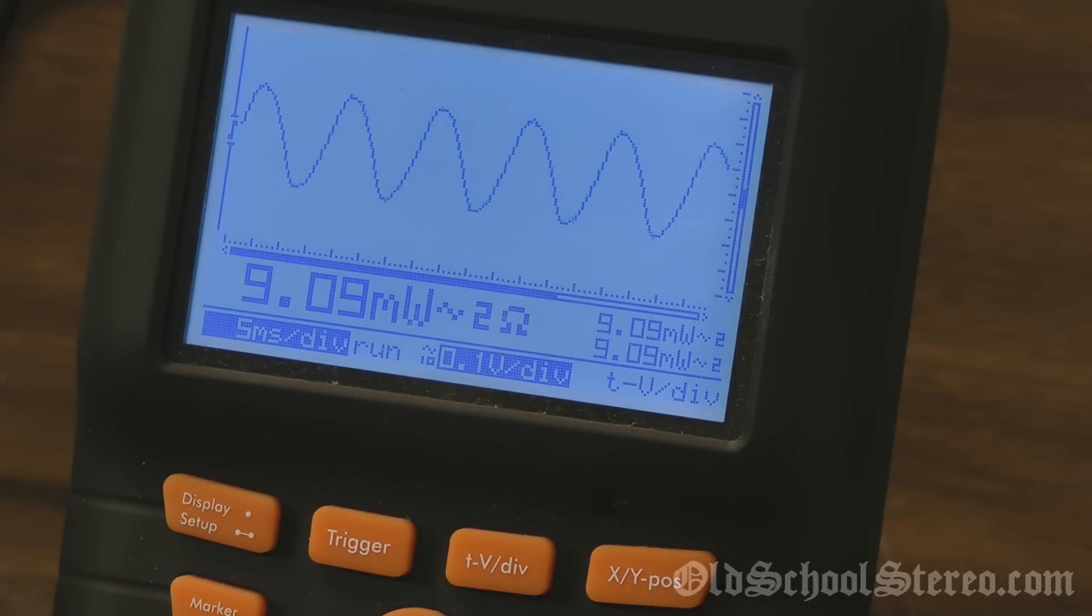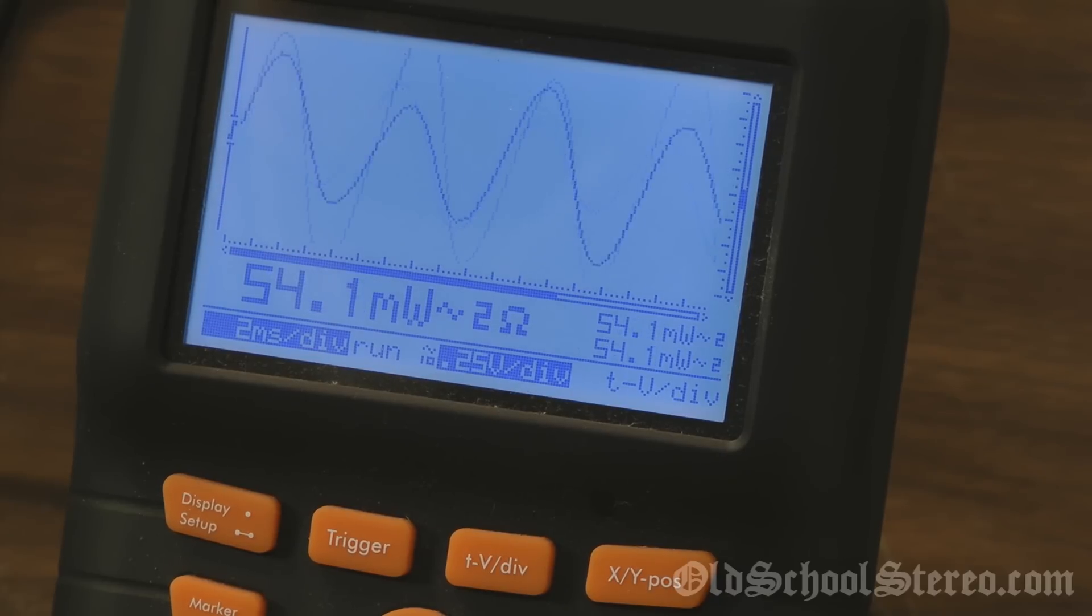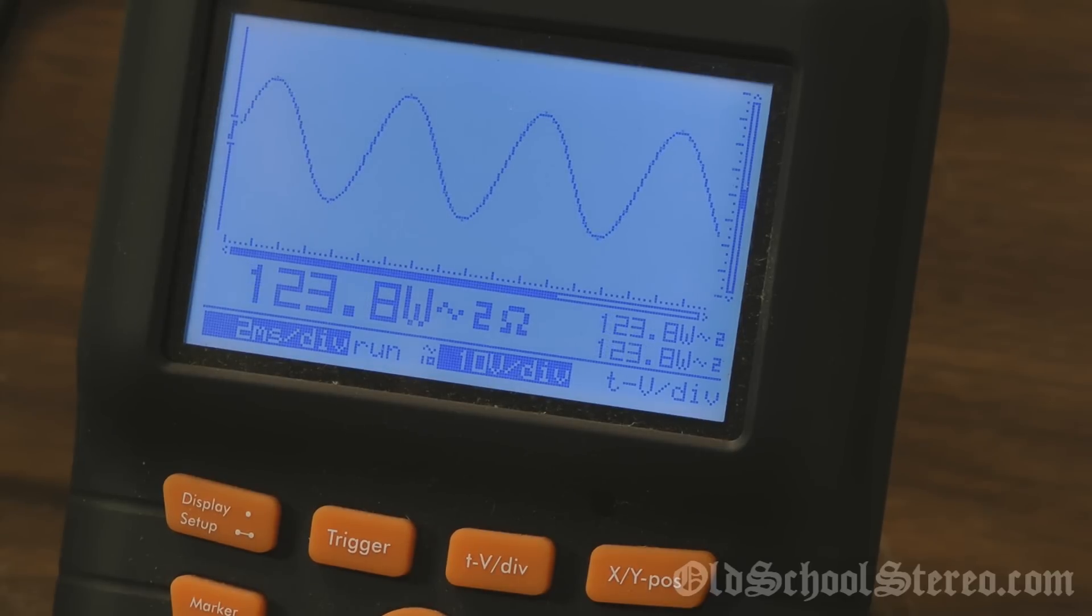Alright, now we're in the 2 ohm mode on the oscilloscope and I've got 2 ohms worth of resistors hooked up. So let's see what she'll do. 100 Hertz test tone again. According to Rockford we should see around 182, and no way. There, 185 is still harsh.